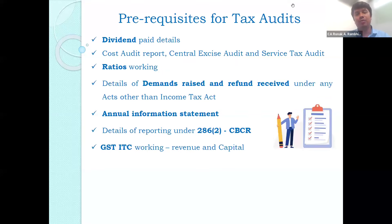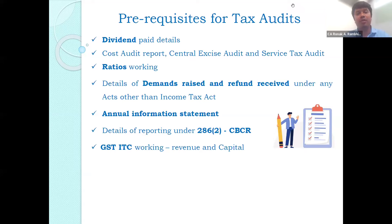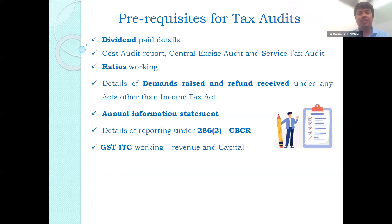There are four ratios which are to be calculated for the tax audit report: gross profit ratio, net profit ratio, stock working, and material consumption ratio. These are based on the financial statements audited under this act.